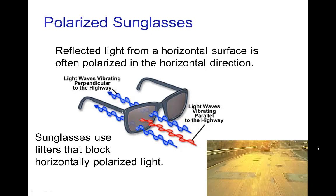Polarized sunglasses are quite common — glare reflecting off of a horizontal surface is horizontally polarized, so if you block horizontally polarized light, you block glare reflected off of horizontal surfaces.